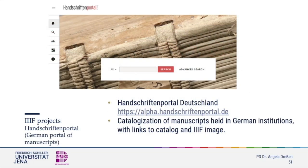Plenty of projects are built around the IIIF standard. Researchers working with manuscripts were among the first to take advantage of the database-independent image tools. The Handschriftenportal Deutschland, the German manuscript portal, collects numerous manuscripts held in German institutions. It provides a catalogization with descriptions, IIIF images, and a link to the catalog of the hosting institution. This way the manuscripts in Germany can be accessed through one entry site.